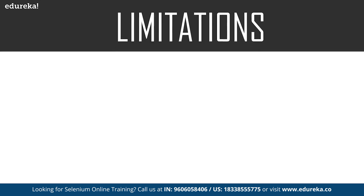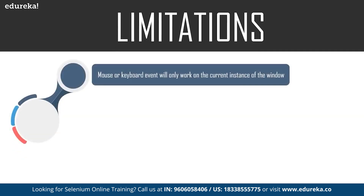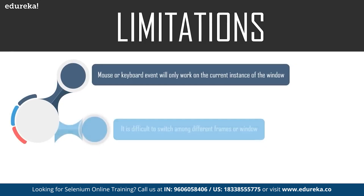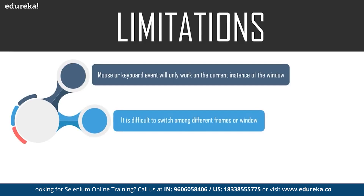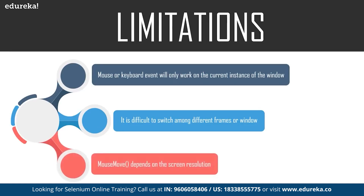Now let's look at the limitations of this Robot class. The mouse or keyboard event will work only on the current window, making it difficult to switch among different screens or windows. For example, if the code is executing a robot event and execution moves to another window, the mouse or keyboard event will still remain on the previous window. Also, methods like mouseMove depend on screen resolution, so if you're using X-Y coordinates, tests will behave differently on different screens. If running tests in a virtual machine, script failure is more likely.